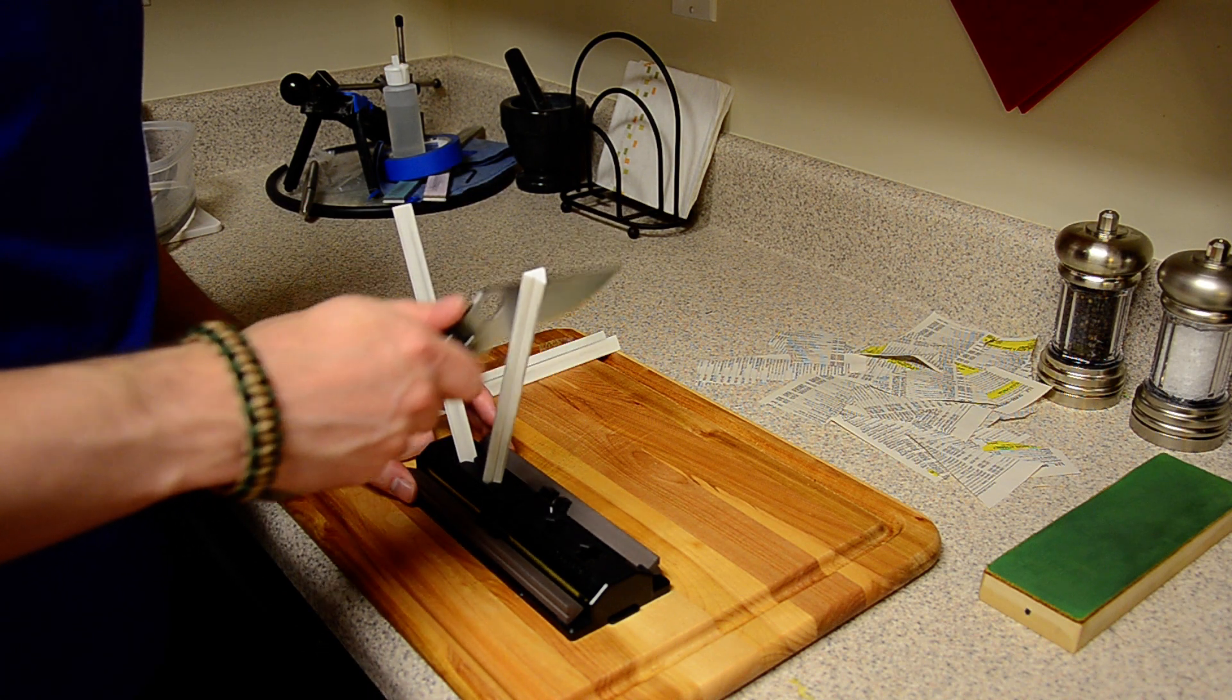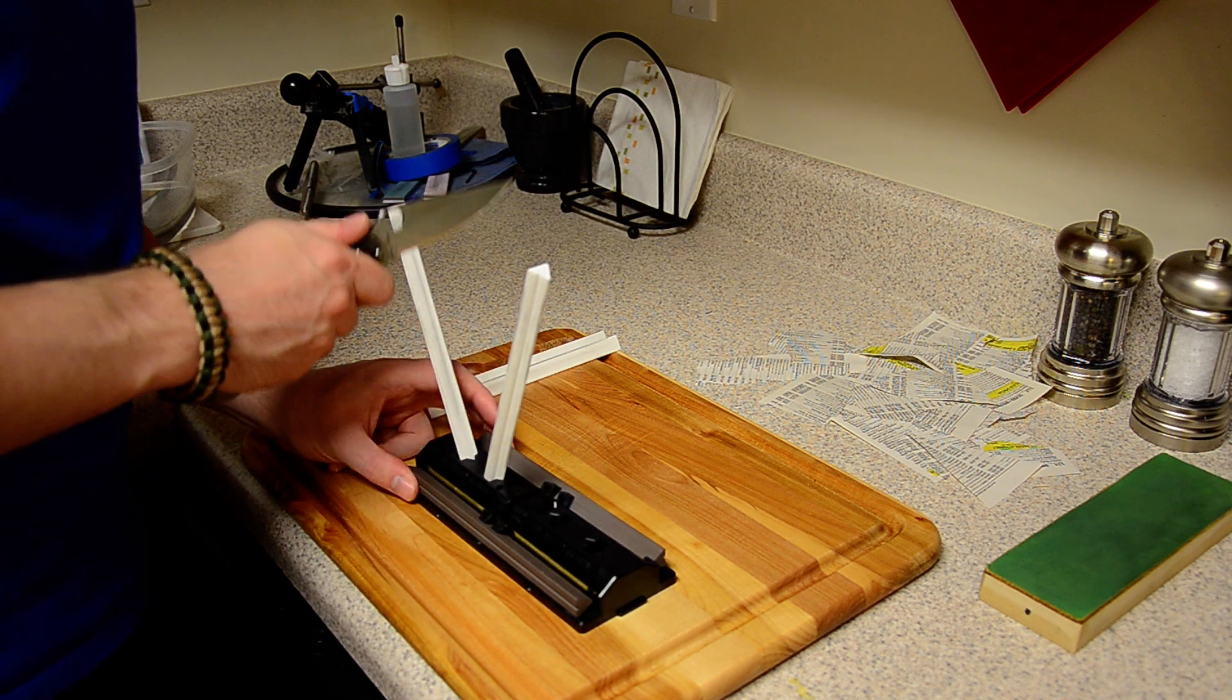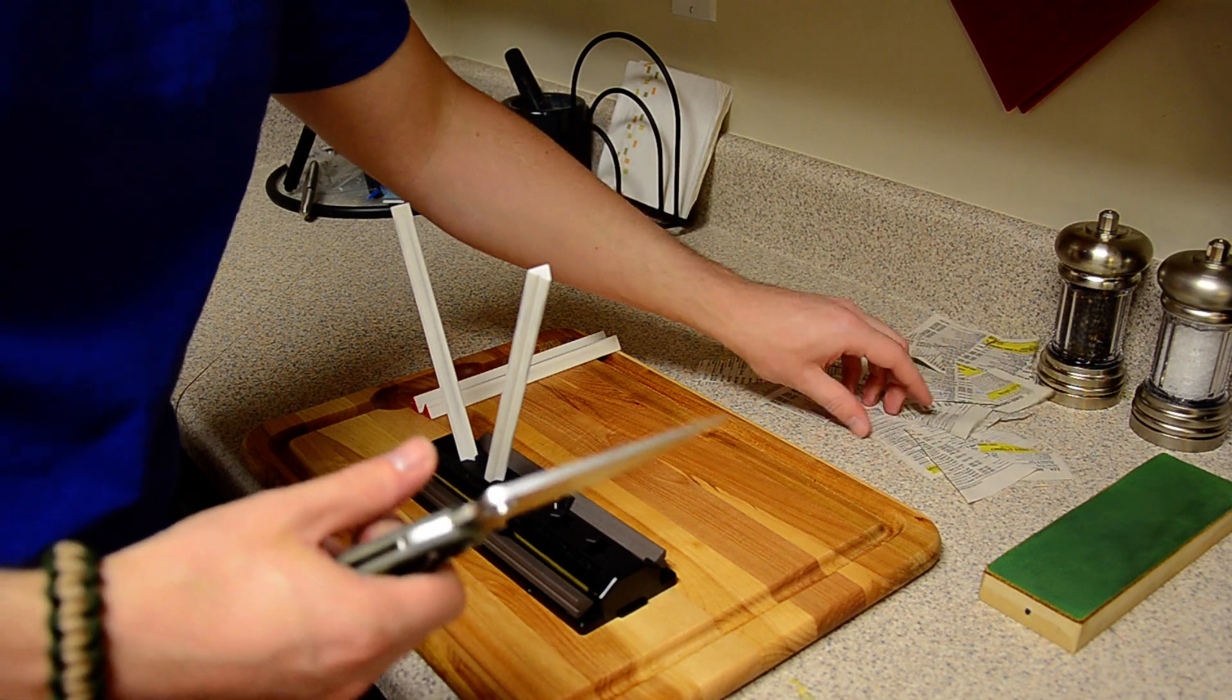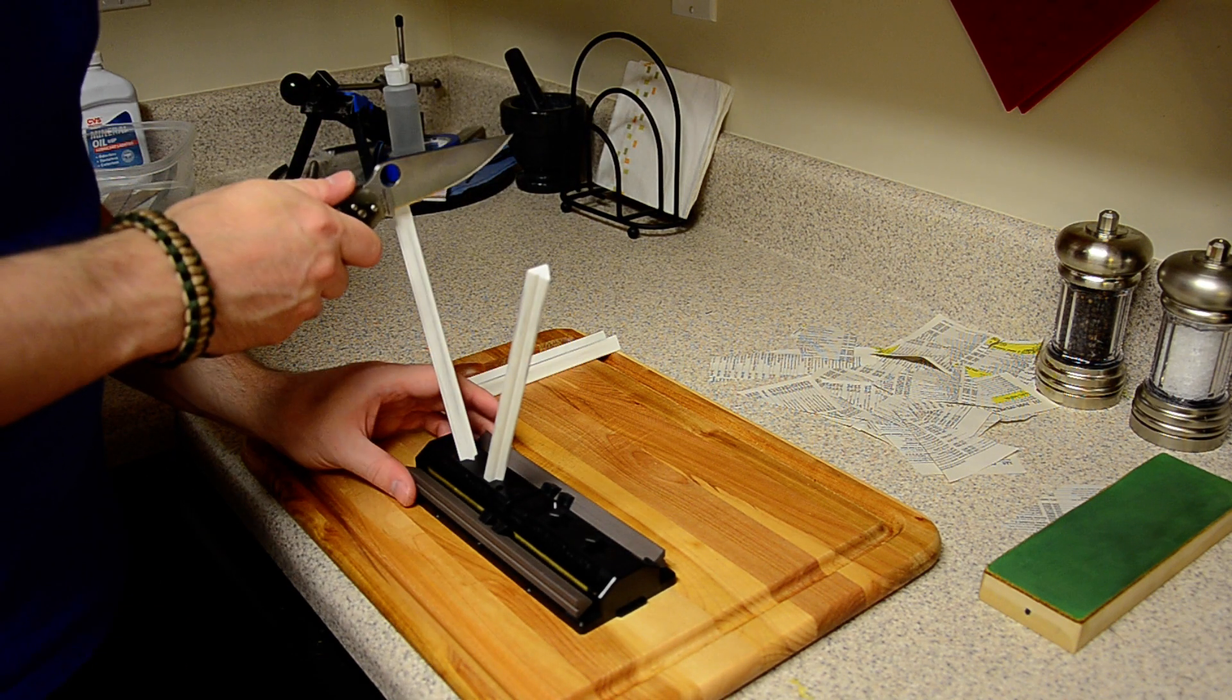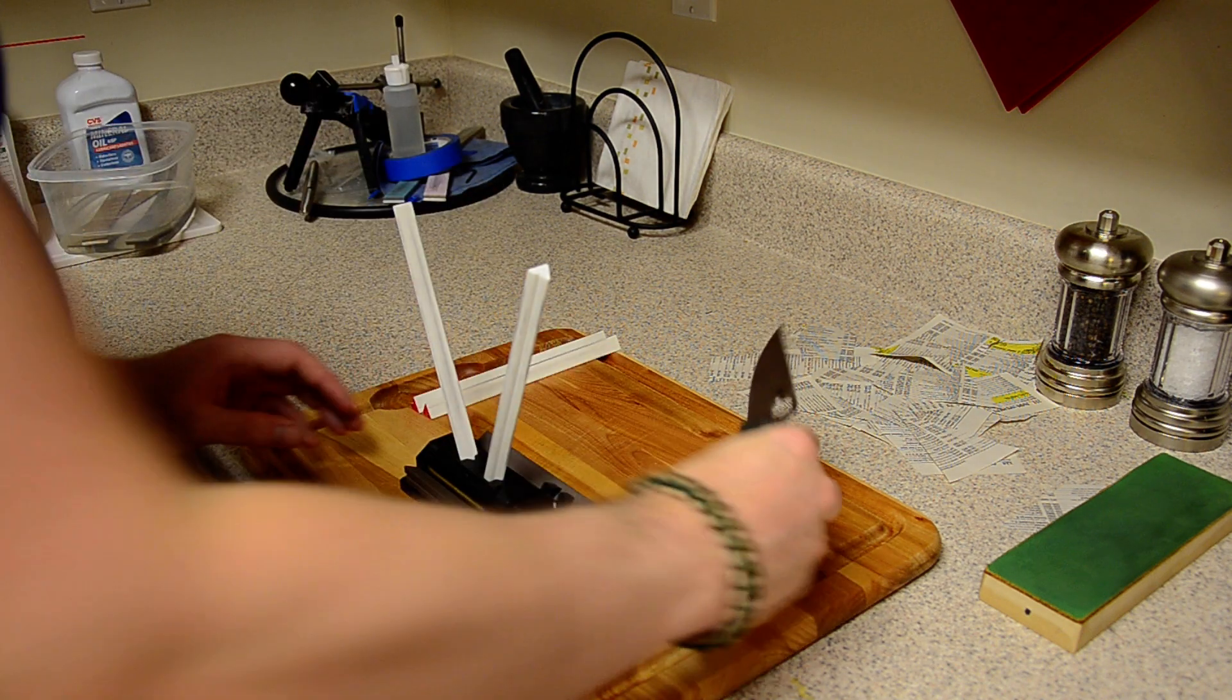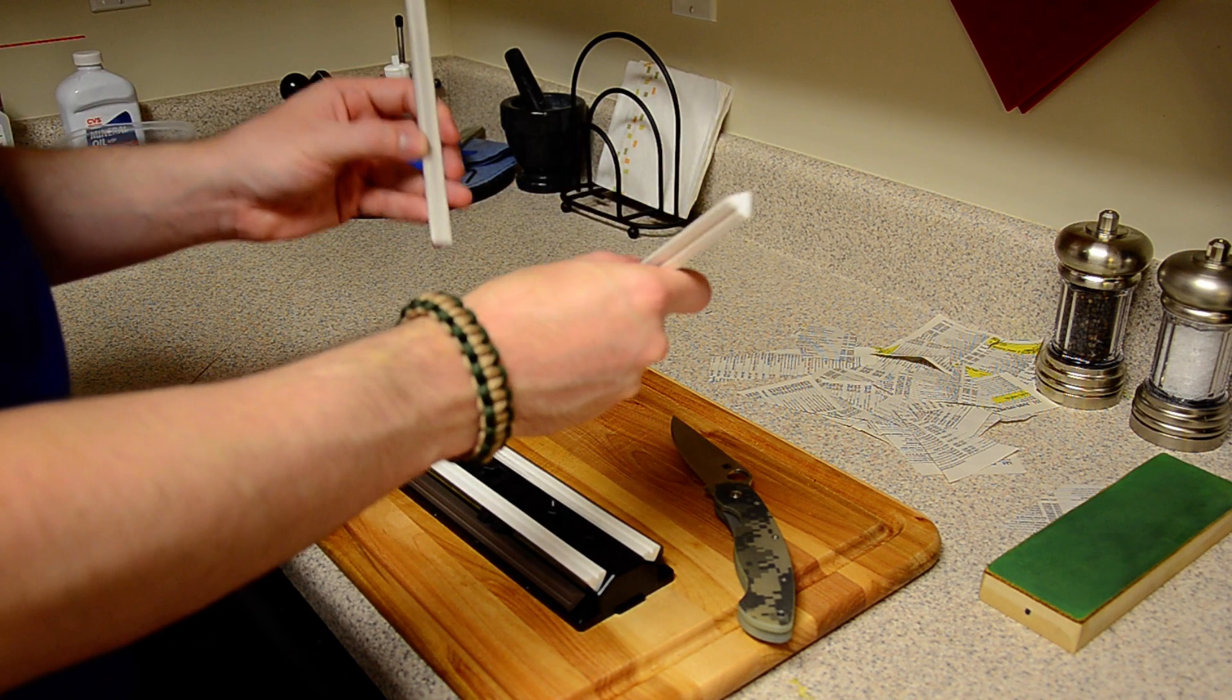But if you have a knife say like a Spyderco with a very acute bevel from the factory you can keep it sharp almost indefinitely with a system like this. And when your edge eventually gets too thick to use on these preset angles which it will in a few years maybe you need to send it to somebody like me who can thin the edge out. So I'm just finishing up with light alternating strokes on the white stones and I'm going to move to the ultra fine stones. People ask about mirror polish all the time.